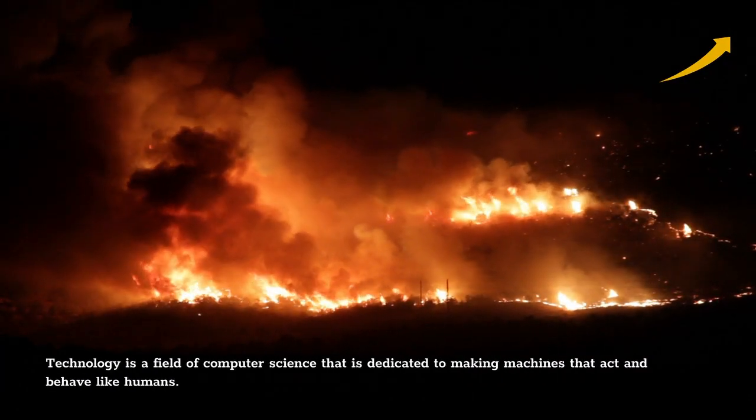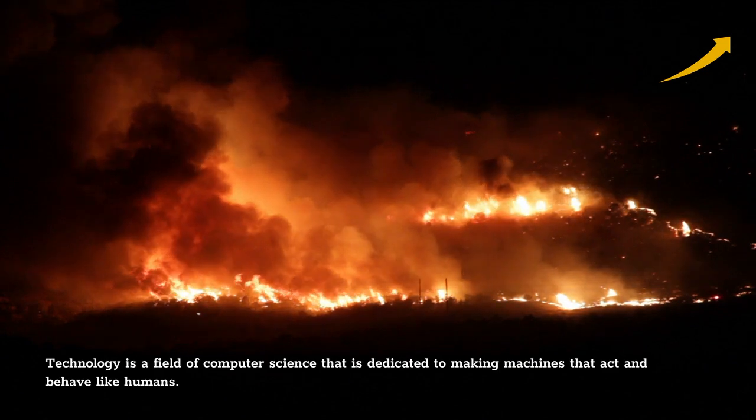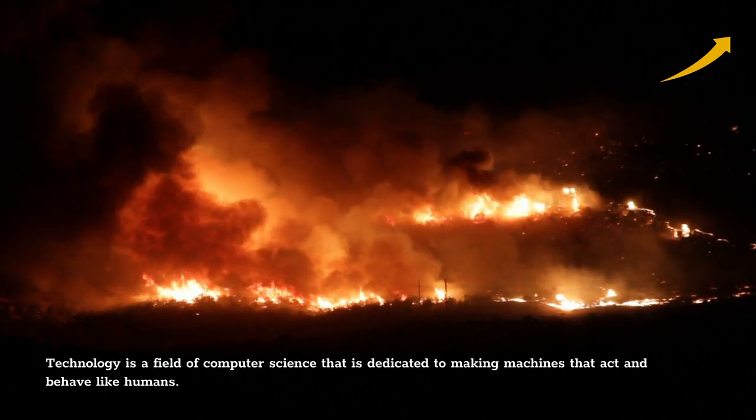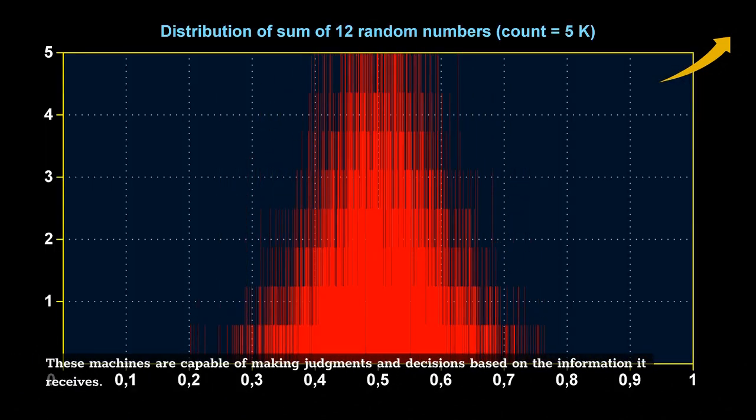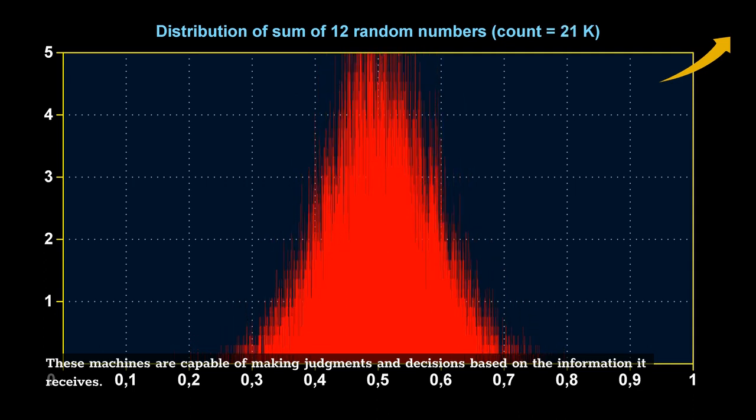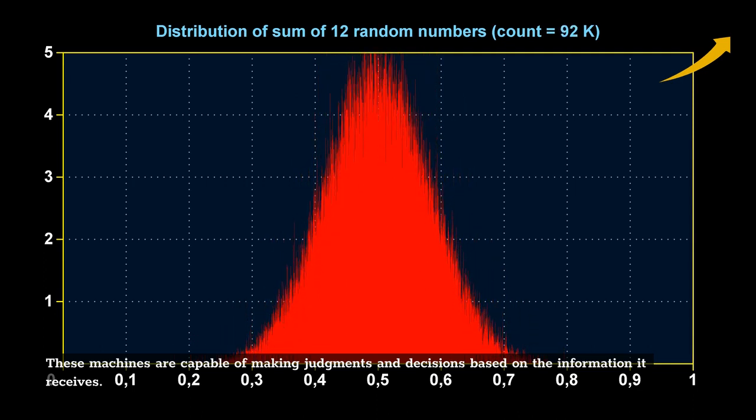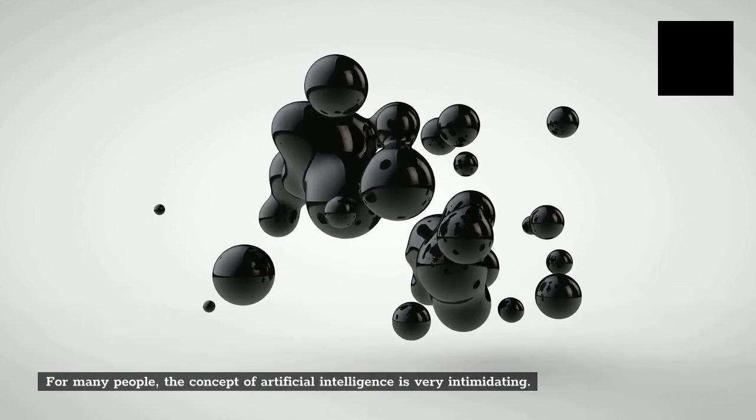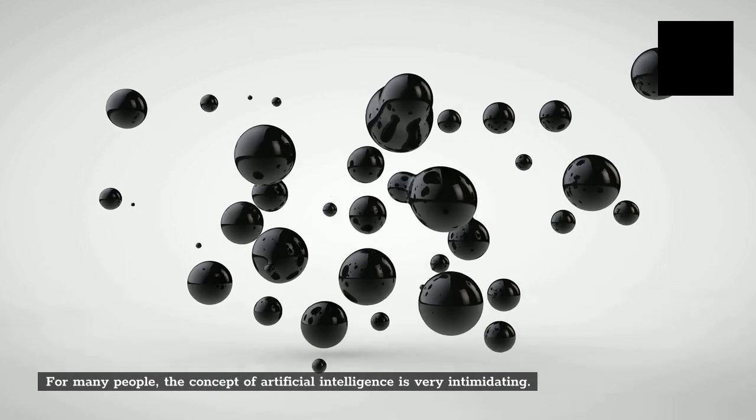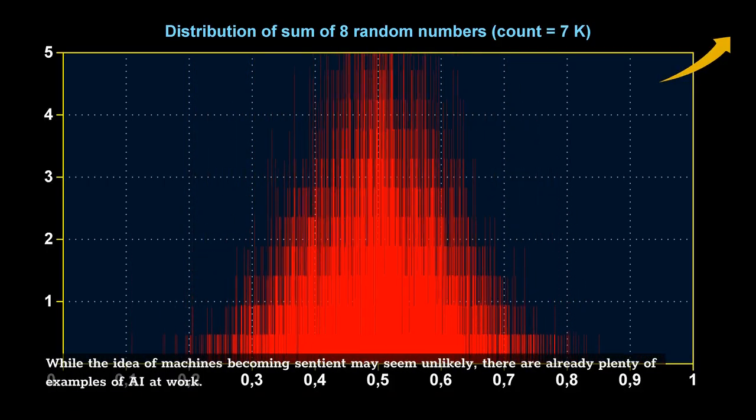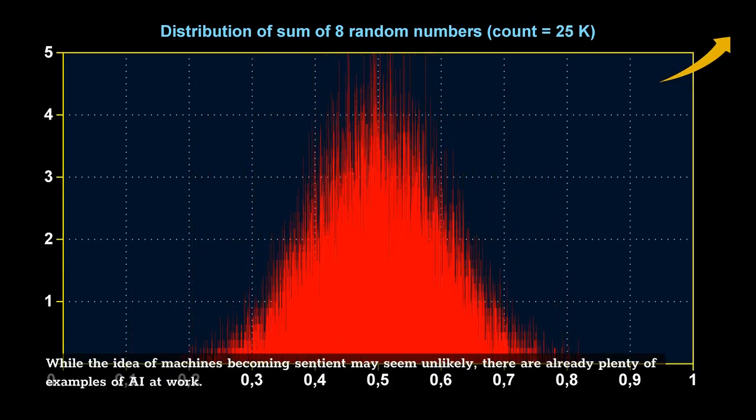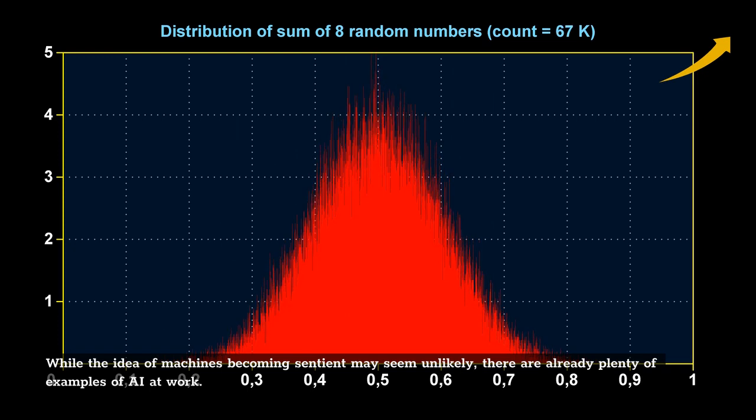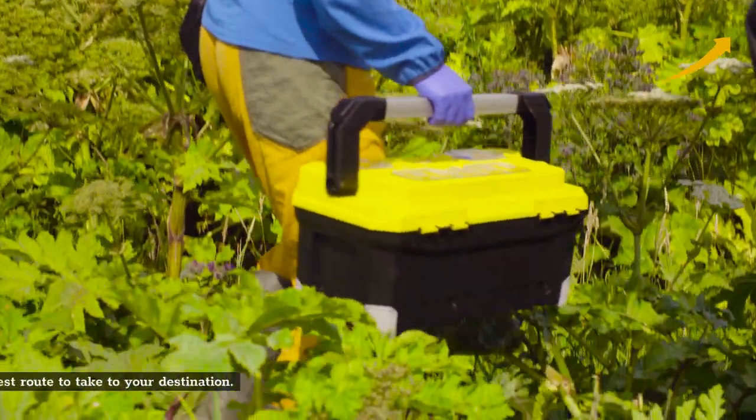AI technology is a field of computer science that is dedicated to making machines that act and behave like humans. These machines are capable of making judgments and decisions based on the information they receive. For many people, the concept of artificial intelligence is very intimidating. While the idea of machines becoming sentient may seem unlikely, there are already plenty of examples of AI at work.